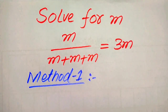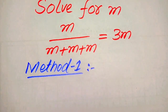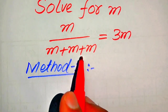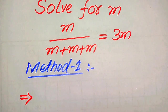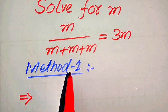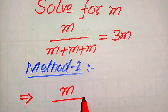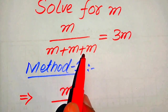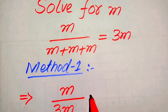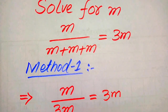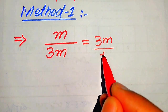In the first method, the very first thing we are going to do is focus on the denominator term. You can see that these are three like terms added together. To add like variable terms, we need to add their coefficients. The coefficient of each of these three m terms is one, so added three times it becomes three m. So we can write three m divided by three m, and we can write a one in the denominator.